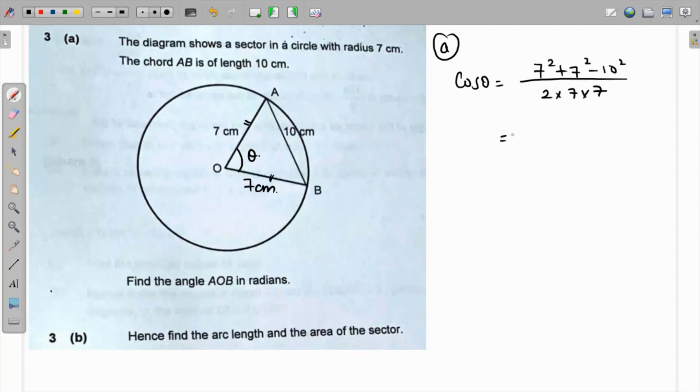Let me grab my calculator. 7 square is 49, so 49 plus 49 minus 100 over 49 times 2. The cos inverse of this value is coming as 91.17 degrees up to two decimal places.